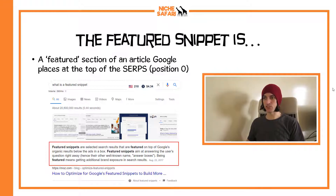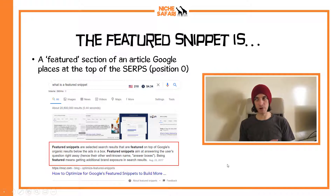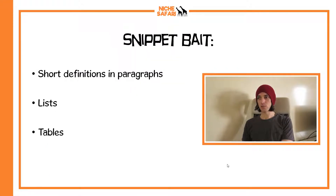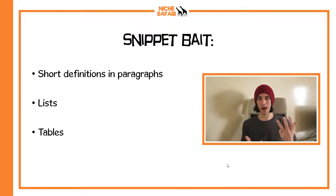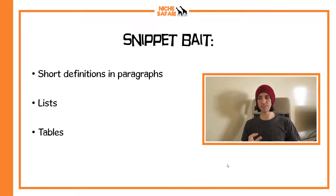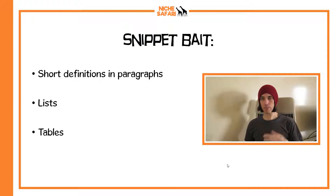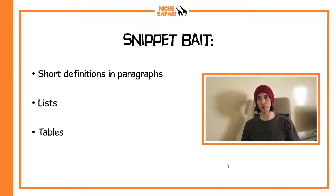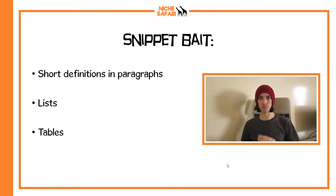Here's an example of a featured snippet. If you type in 'what is a featured snippet' on Google, you'll see that moz.com has got a featured snippet — just a definition of what featured snippets are. Definitions are very common in featured snippets. There are many types, but the three that bloggers usually try to win are short definitions in paragraphs, lists, and tables. I'm calling these 'snippet bait' because you're trying to create these short definitions, lists, or tables to get Google to place them at the top of the search results.